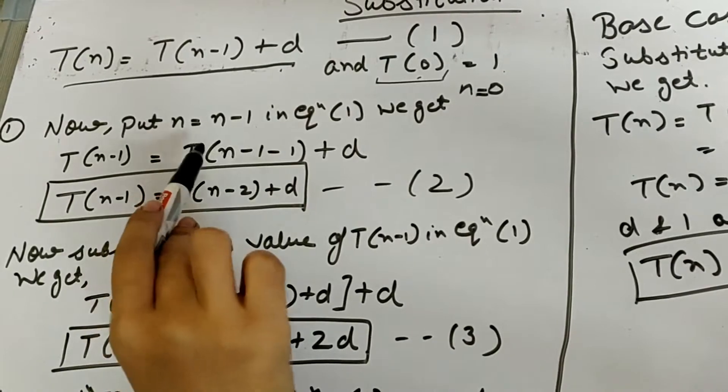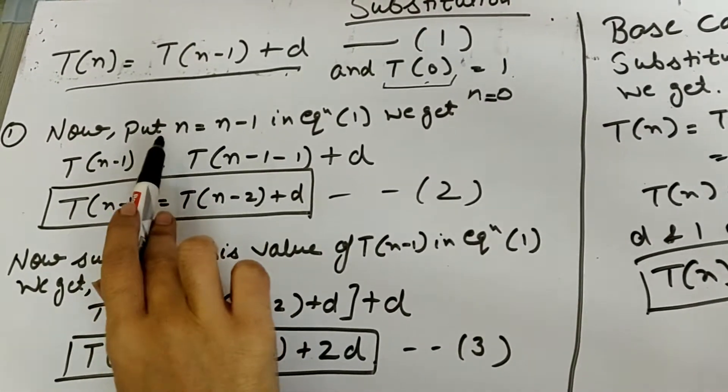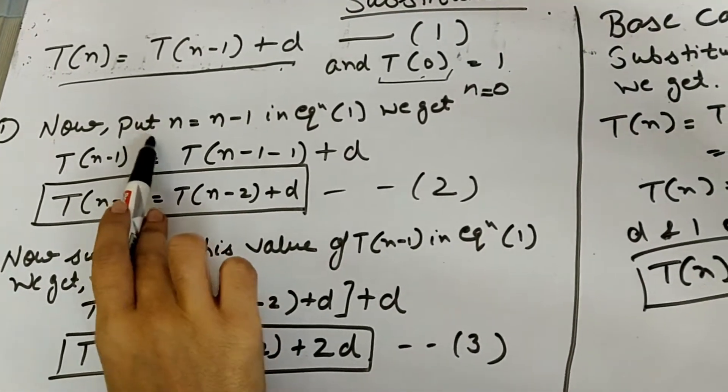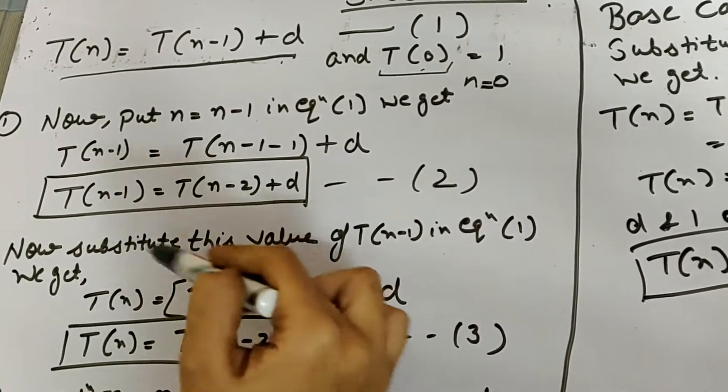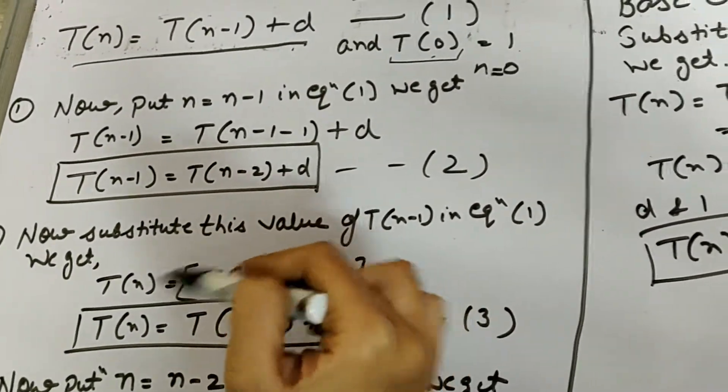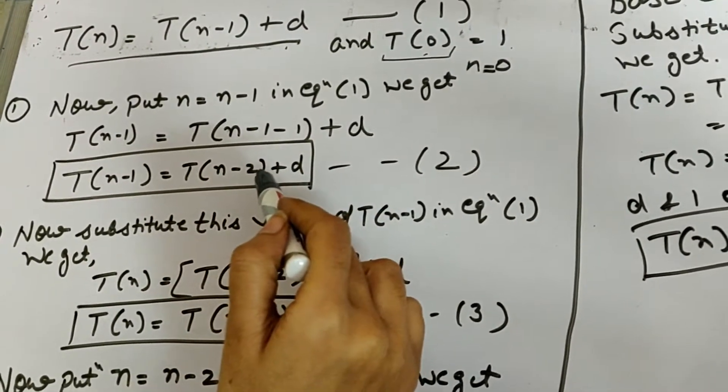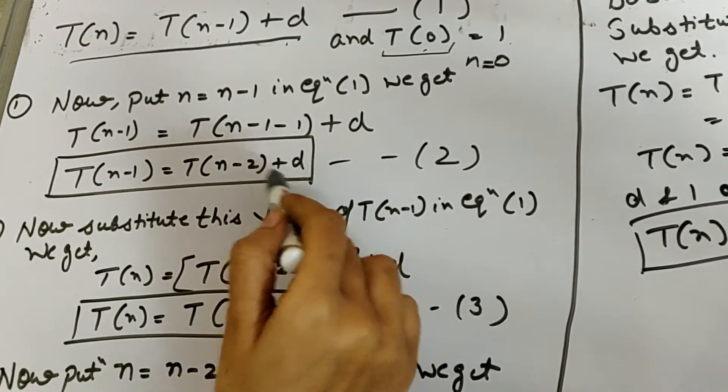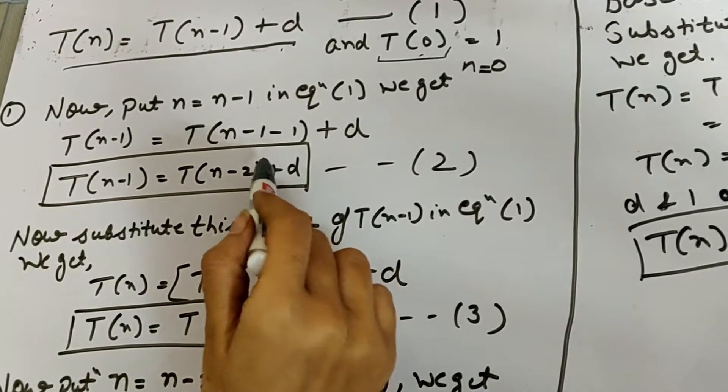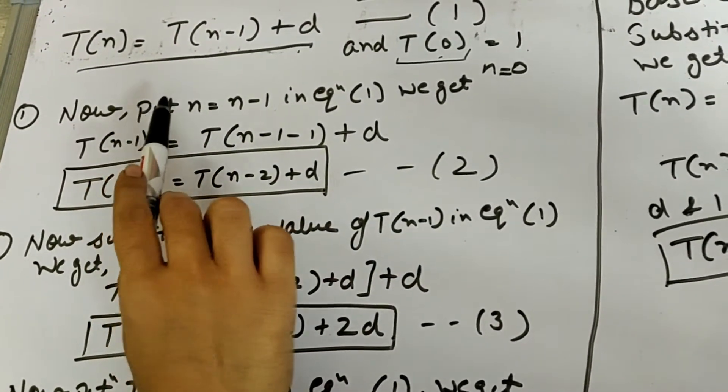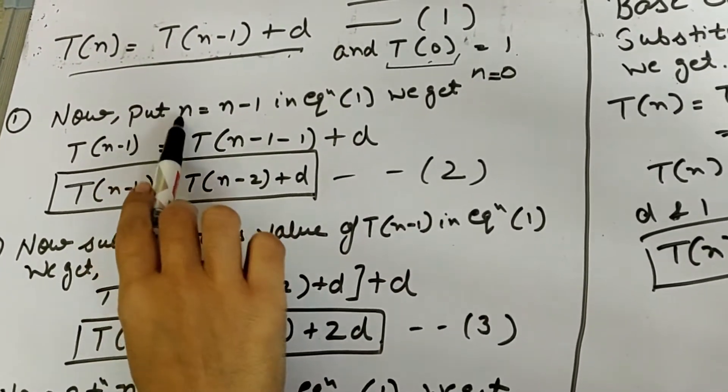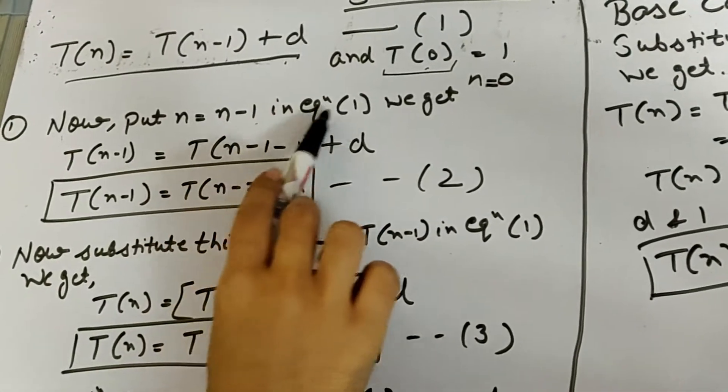Now let's find it with the help of substitution. If we have to find out with substitution, then we have to substitute some value a number of times and we have to see when we solve this. So now we have to put n equals n-1 in equation 1.